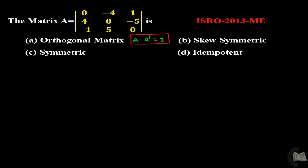What is the last option? Idempotent matrix. If you calculate the square of matrix A and you get A, then it is called an idempotent matrix.